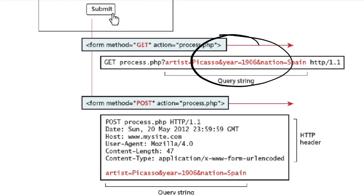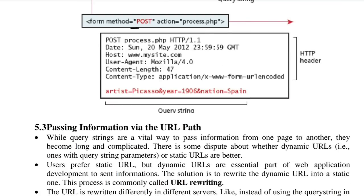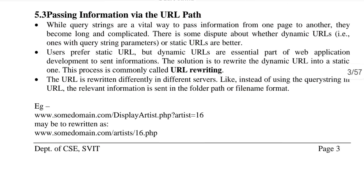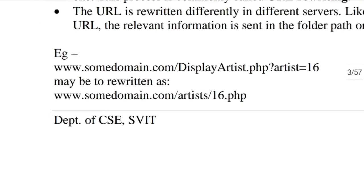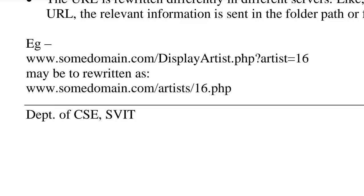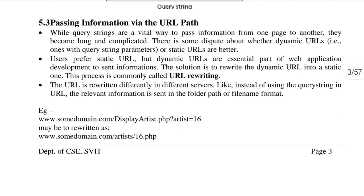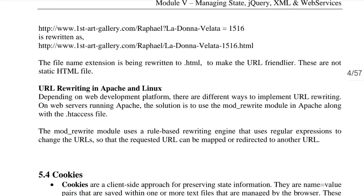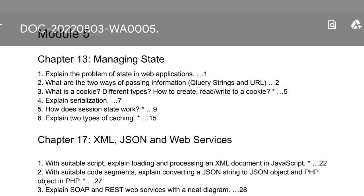Using query strings, whatever we select will be added to the query string using the ampersand value. If you use the POST method, it will be added in the HTTP header form. For passing information via the URL path, a query string like rt=16 can instead be represented as a separate web page marked as 16.php. That's how passing information via the URL path works.